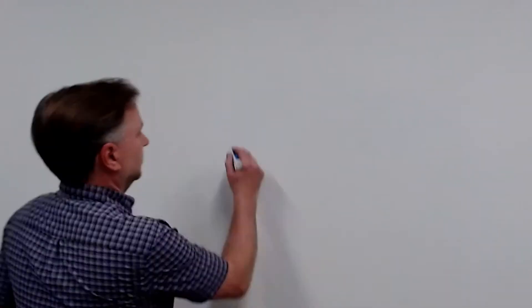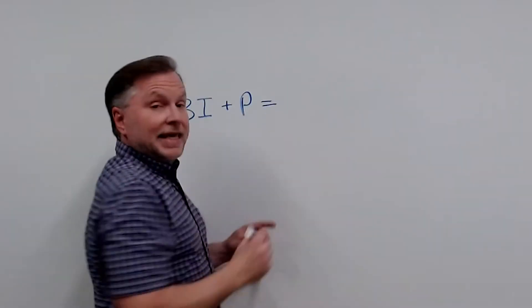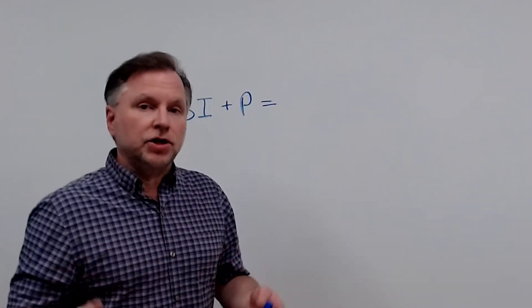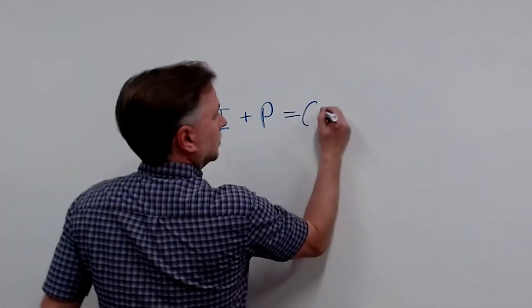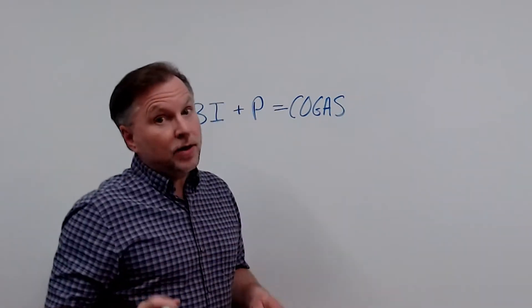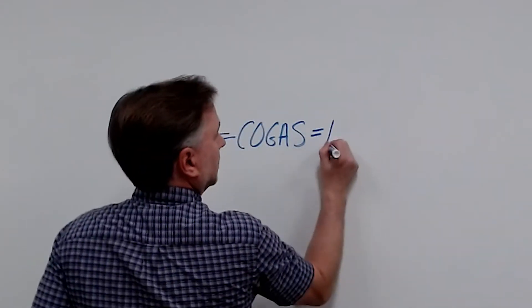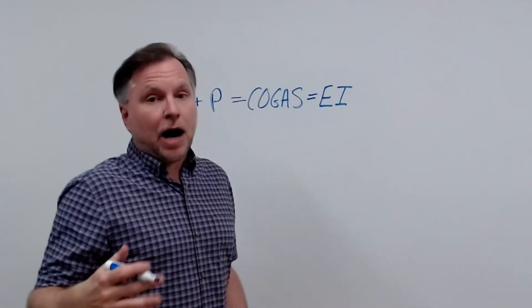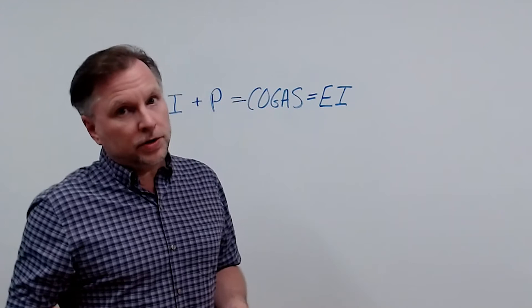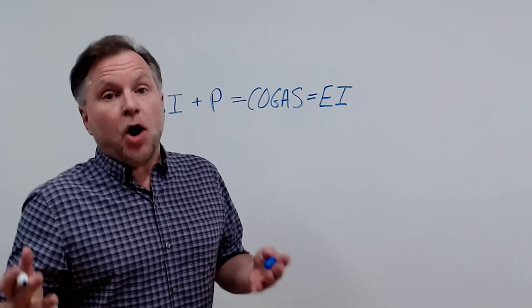So now let's summarize that formula. Beginning inventory, which we'll use as just BI for beginning inventory, plus our purchases, which we'll use as a P, equals our cost of goods available for sale. Now, it also equals our ending inventory, which is EI, plus our cost of goods sold, or COGS, C-O-G-S.